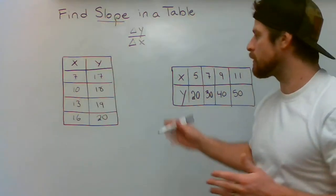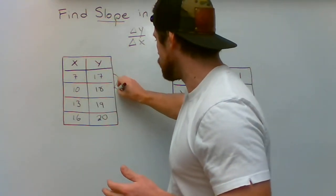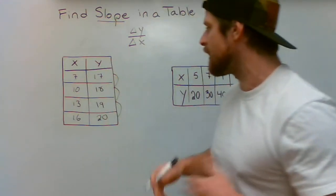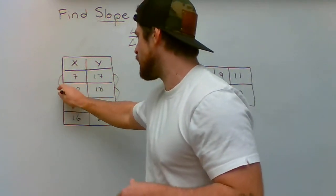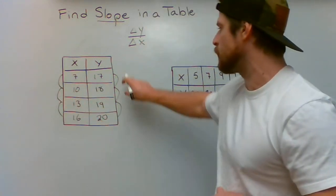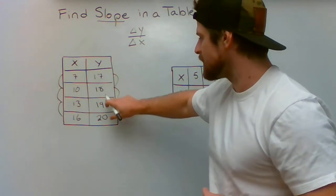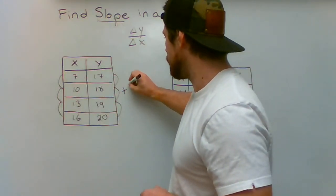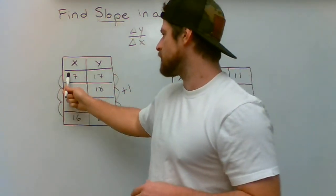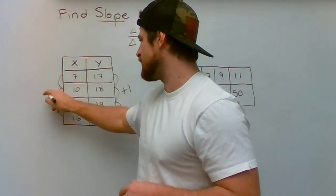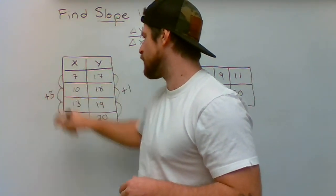So all you need to do is figure out your change in values by doing these change lines on the side. I will have my students always draw these out and write off to the side what's happening. 17, 18, 19, 20, there is a common pattern of plus one. Over here 7, 10, 13, 16, common pattern of plus three.